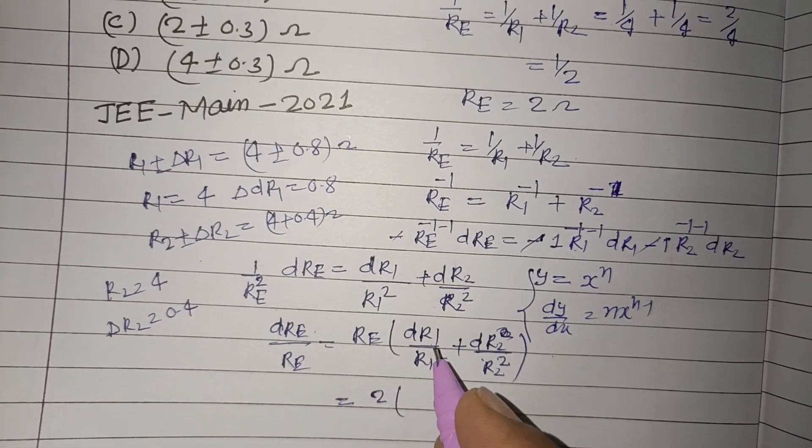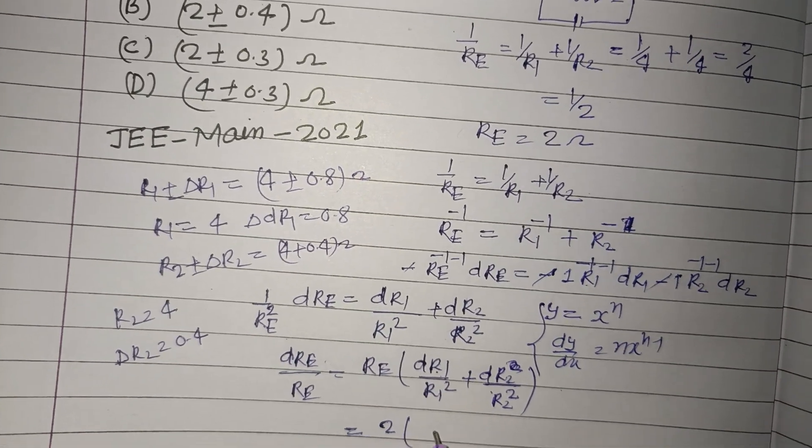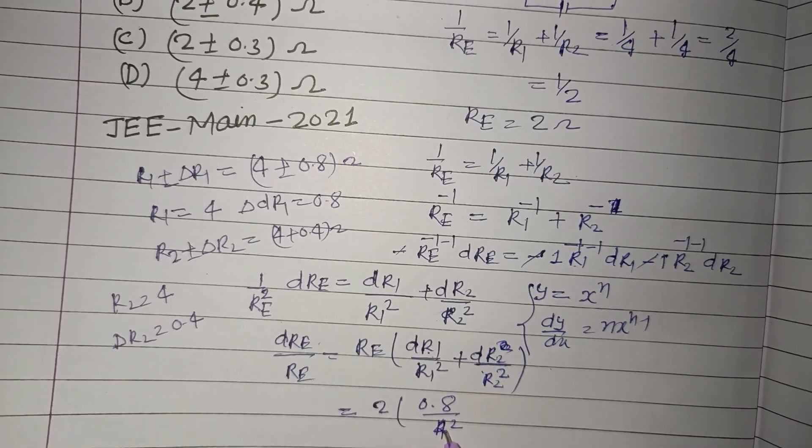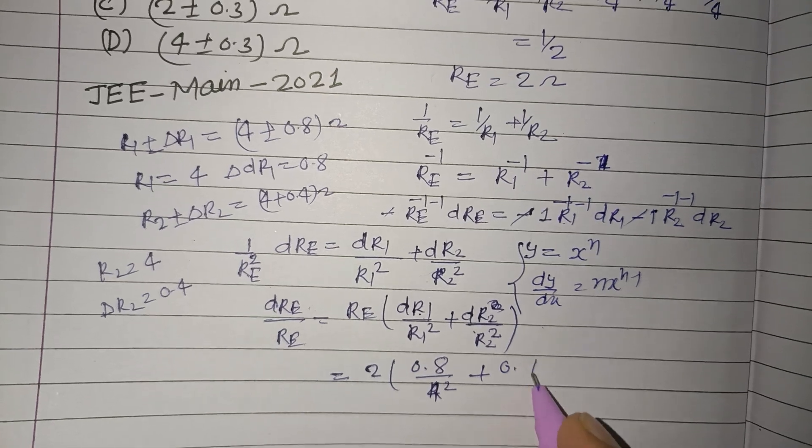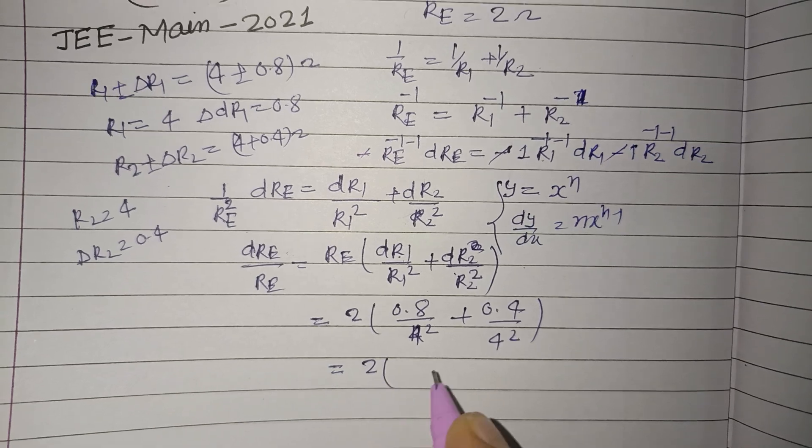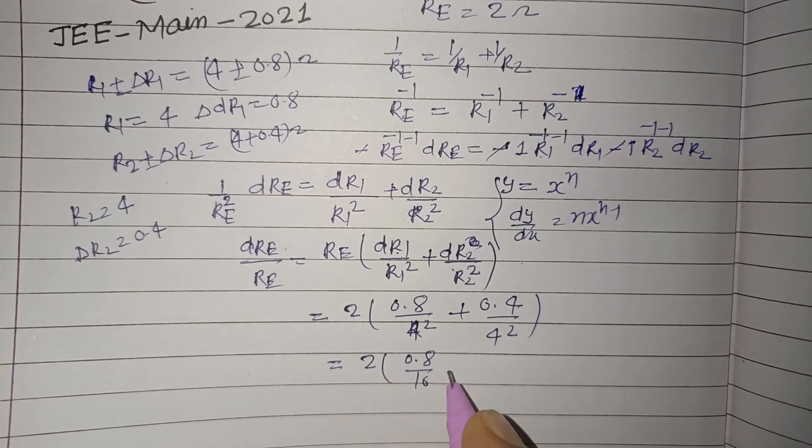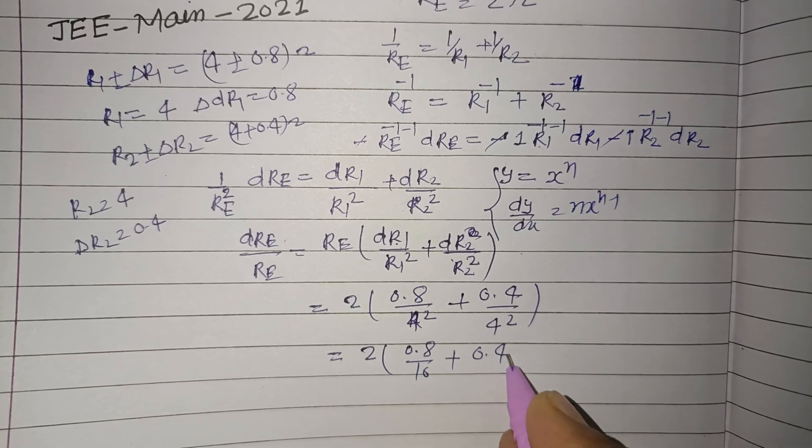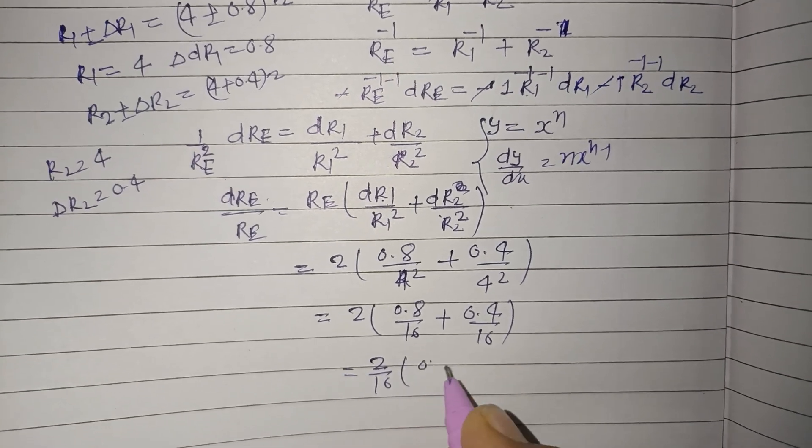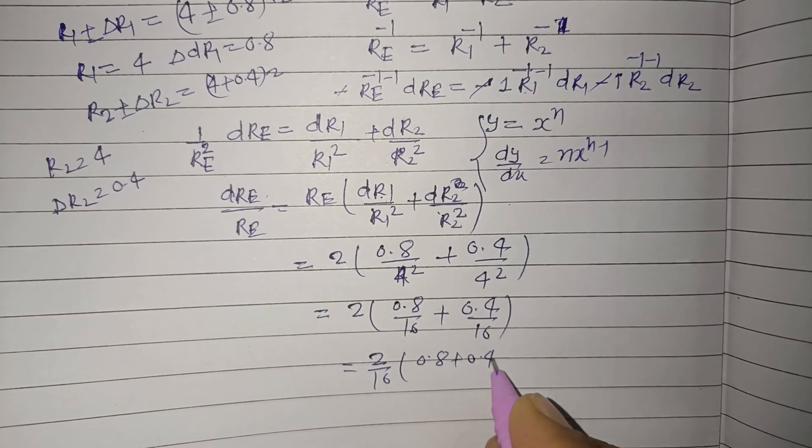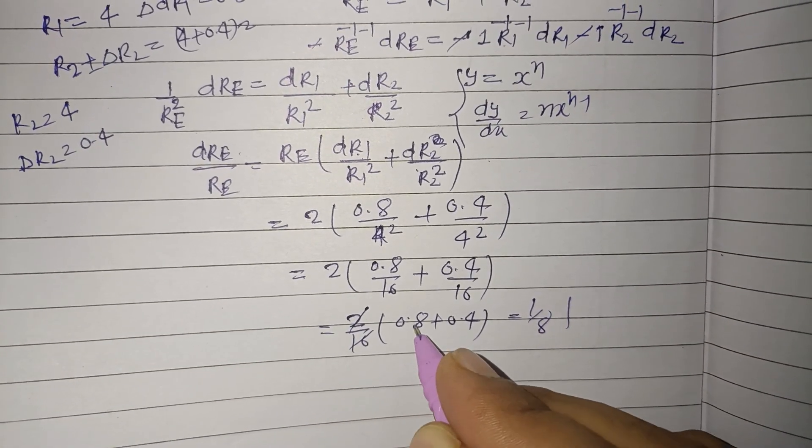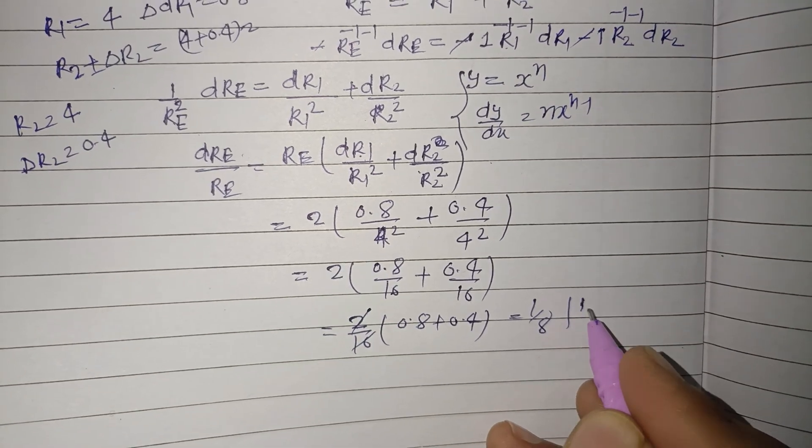So putting these values, dR1 is 0.8 and R1 is 4, so 4 square plus 0.4 over 4 square. So this will be 0.8 upon 16 plus 0.4 upon 16. So taking 16 common, 2 upon 16, 0.8 plus 0.4, that is. So 1 upon 8, and this is 0.4 plus 0.8, this is 1.2.